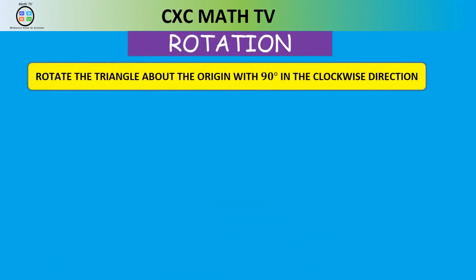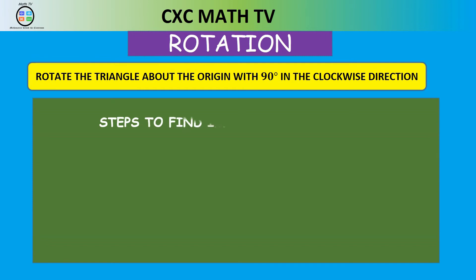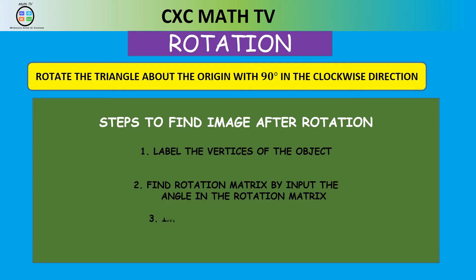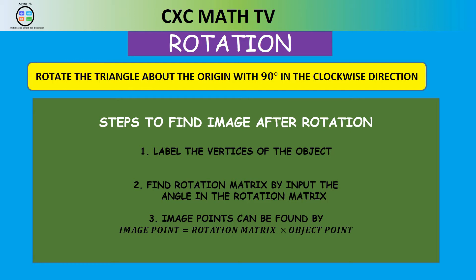Here are the steps to find the image after rotation: first, label the vertices of the object; second, find the rotation matrix by inputting the angle; third, the image point is found by multiplying the rotation matrix by the object point.